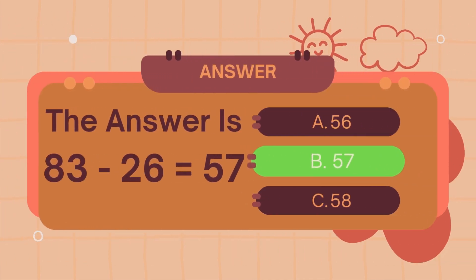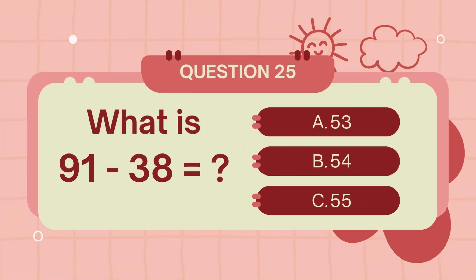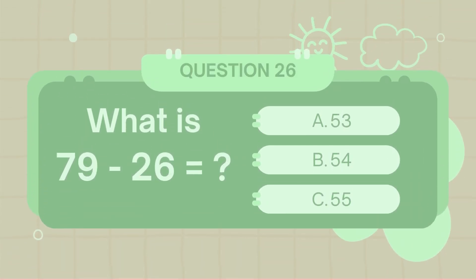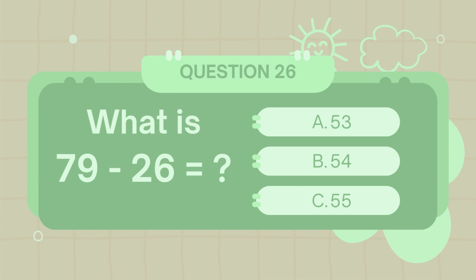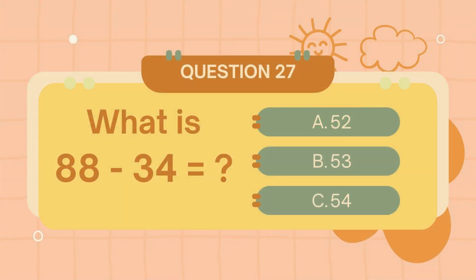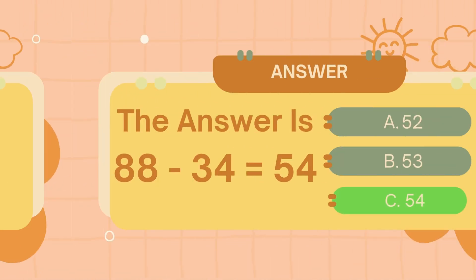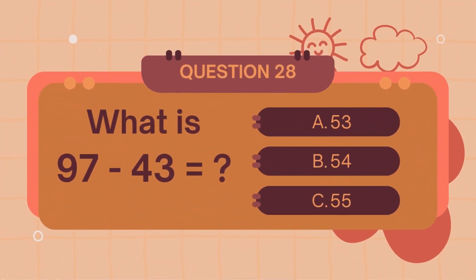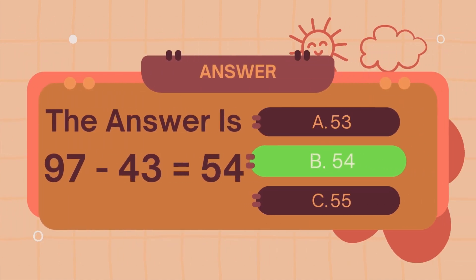What is 91 minus 38? The answer is 53. What is 79 minus 26? The answer is 53. What is 88 minus 34? The answer is 54. What is 97 minus 43? The answer is 54.